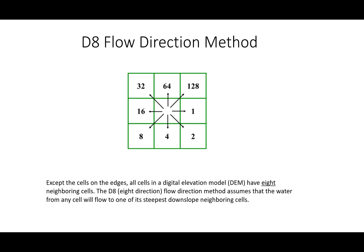The delineation of stream network and watershed boundaries in GIS using a DEM is based on the principle that water flows downstream and each cell in a DEM, except the cells on the edges, is surrounded by eight neighboring cells. The D8, which translates to 8 direction, flow direction method assumes that the water from any cell will flow to one of its steepest downslope neighboring cells.